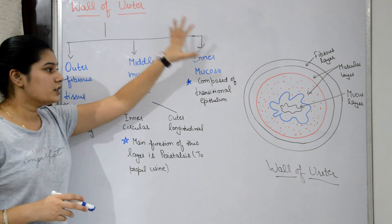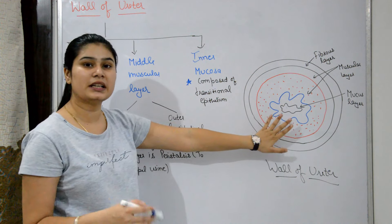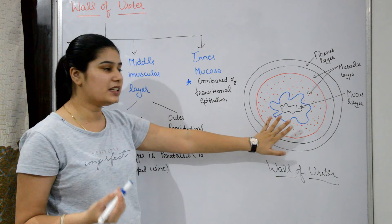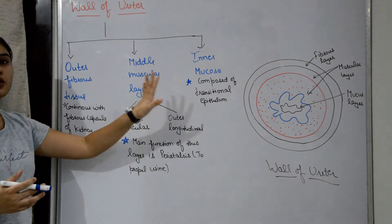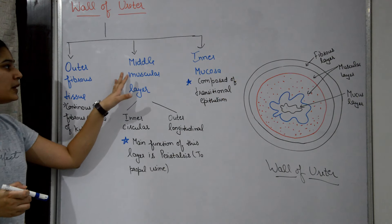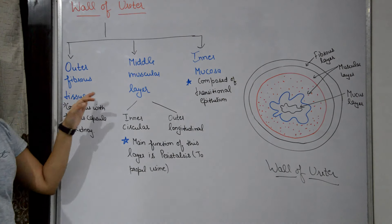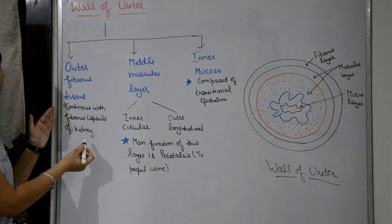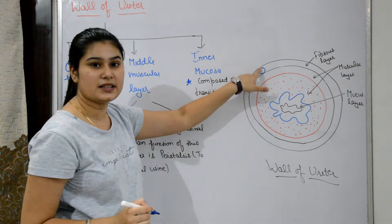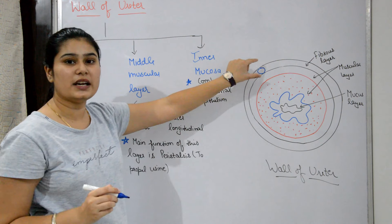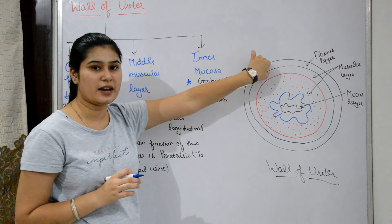The wall of the ureter is made of three layers of tissue. The outer fibrous layer is continuous with the fibrous capsule of the kidney.